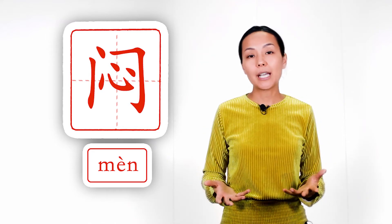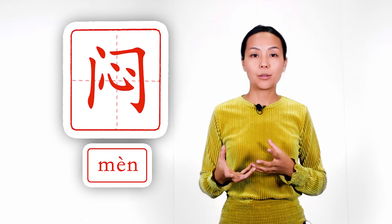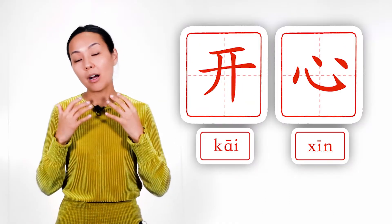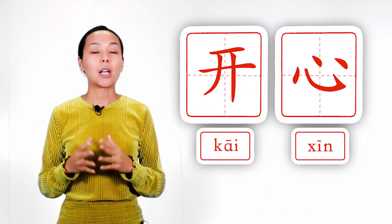And in this example you can guess that when heart is locked, people are usually gloomy, maybe even depressed. And when heart is open, kai xin, people are usually happy.